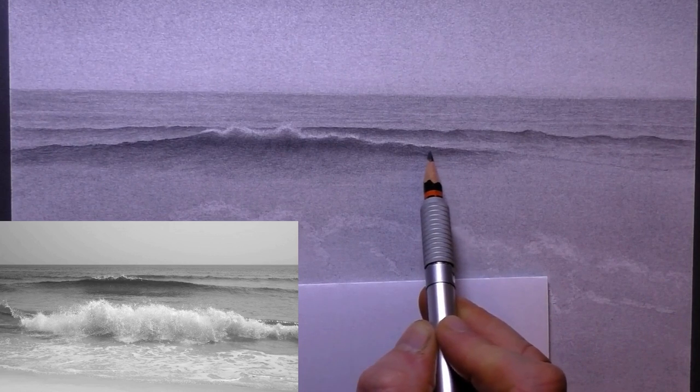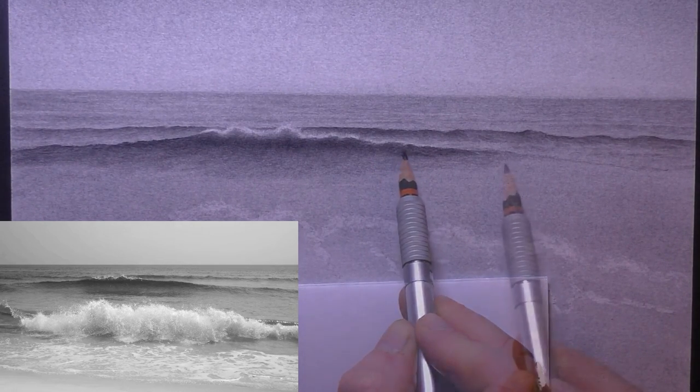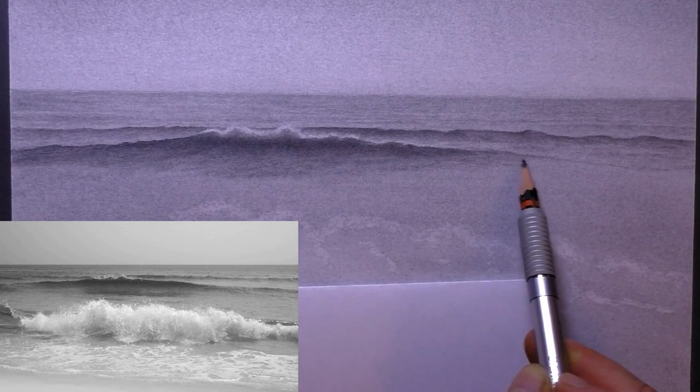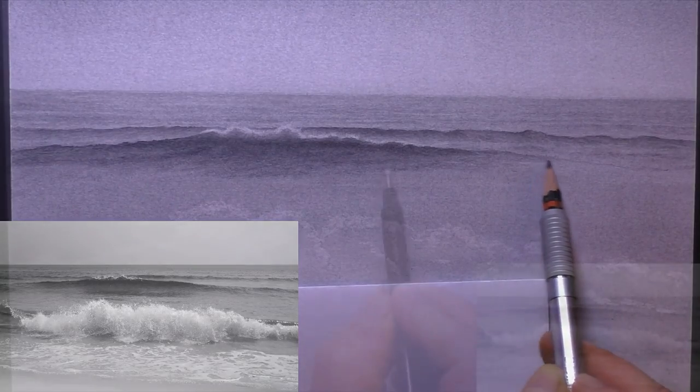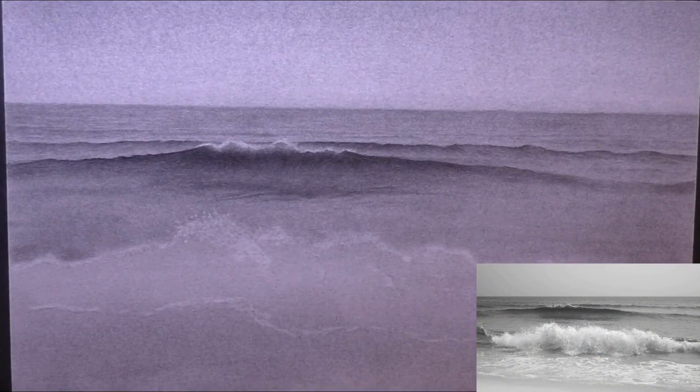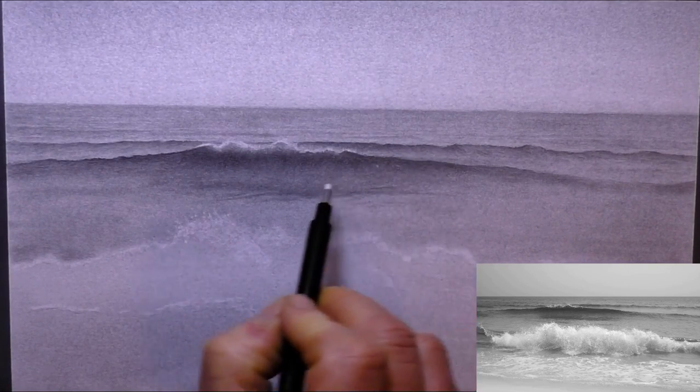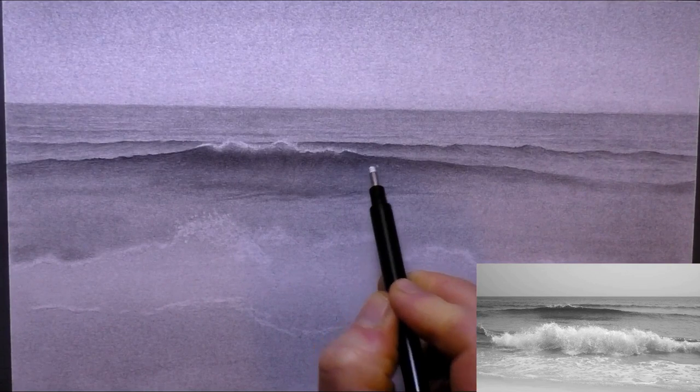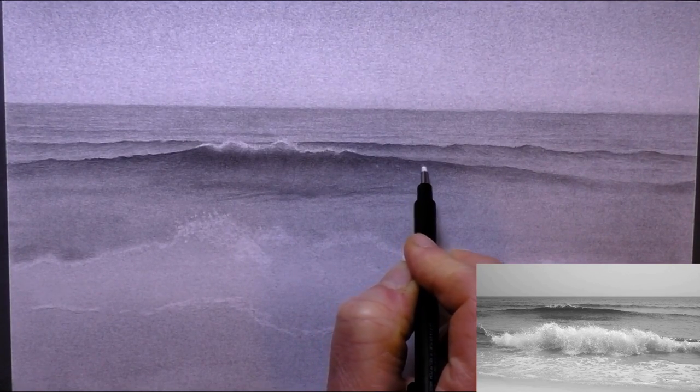I just hold it about a foot away from my drawing and I just give two light coats of it as a final fixative. Sometimes it does throw out a few little blobs which land on the drawing, and it can panic you because they look dark, like it's going to ruin your drawing. But as soon as it dries, you don't see anything. It just dries completely invisible.